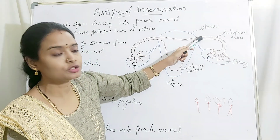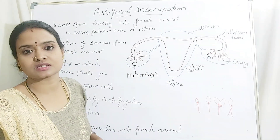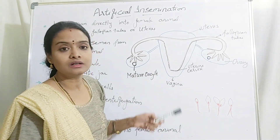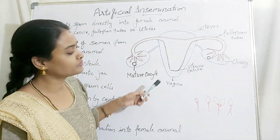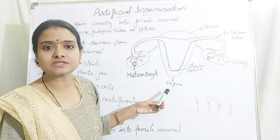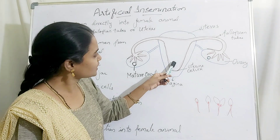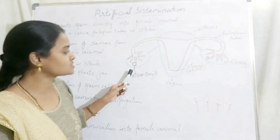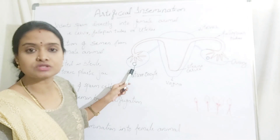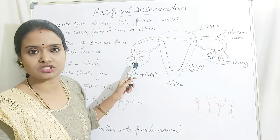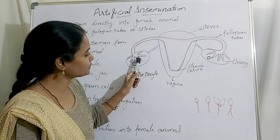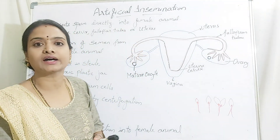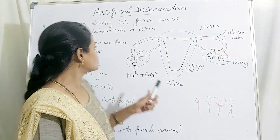up to the fallopian tubes, or into the uterus. So here you are shortening the travel of the sperm cell. Normally, the sperm cell has to travel all the way through the fallopian tubes and reach the mature oocyte to undergo fertilization. In artificial insemination, you are shortening that distance.